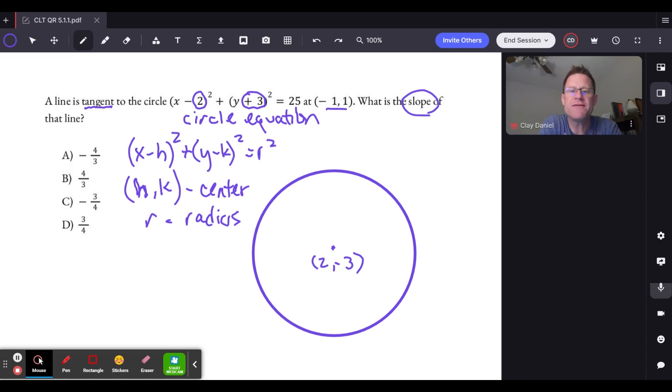We're going to leave the radius for now. We'll come back to that. But now let's think about that tangent line. Now that we know where the center of the circle is.